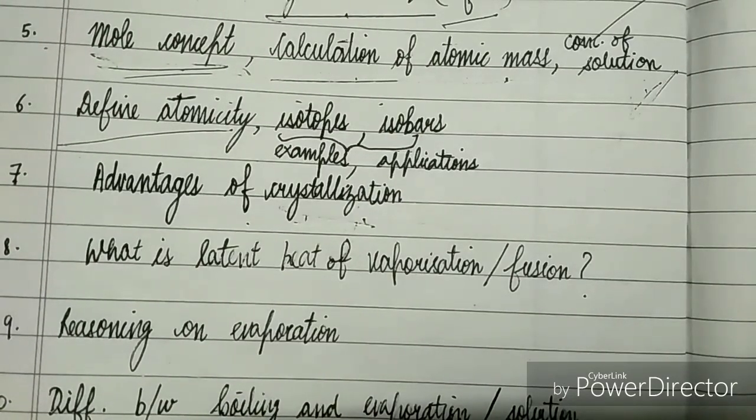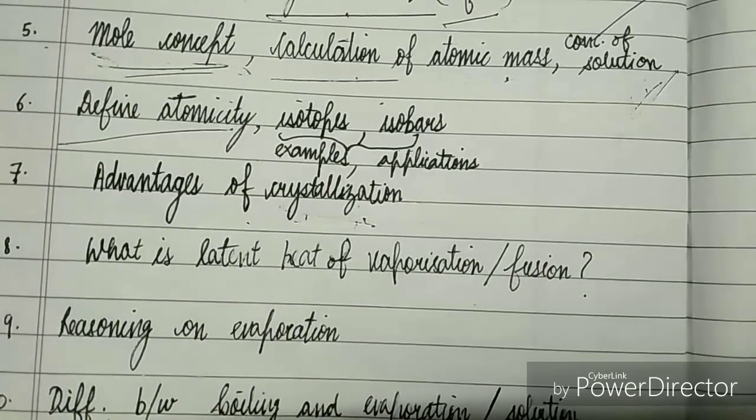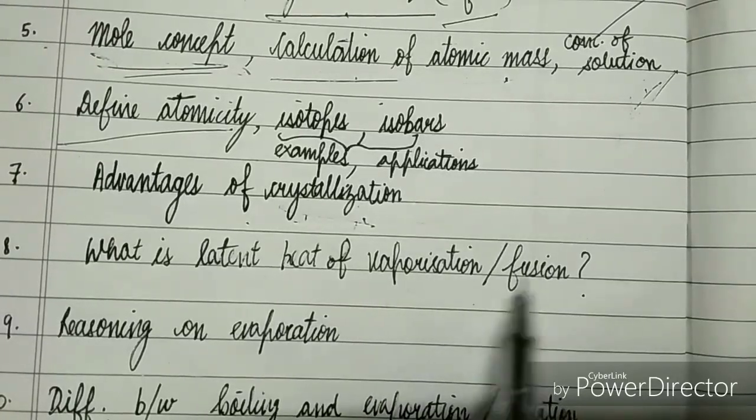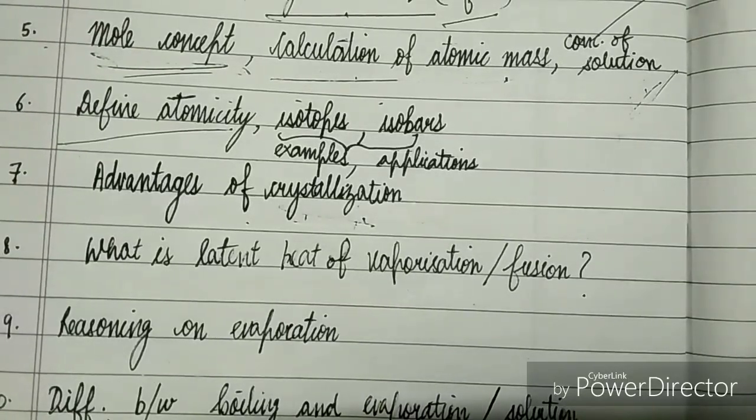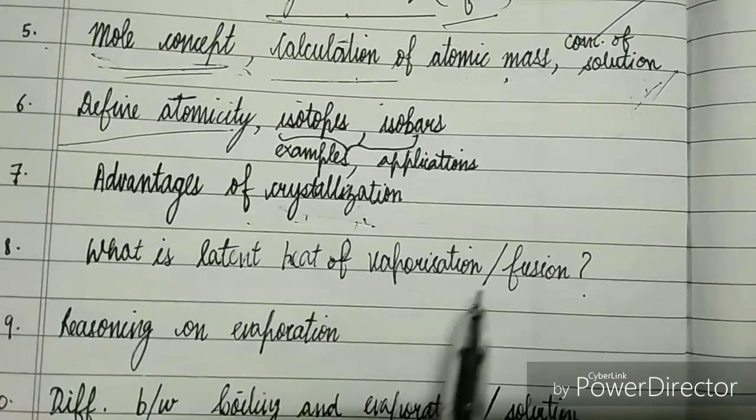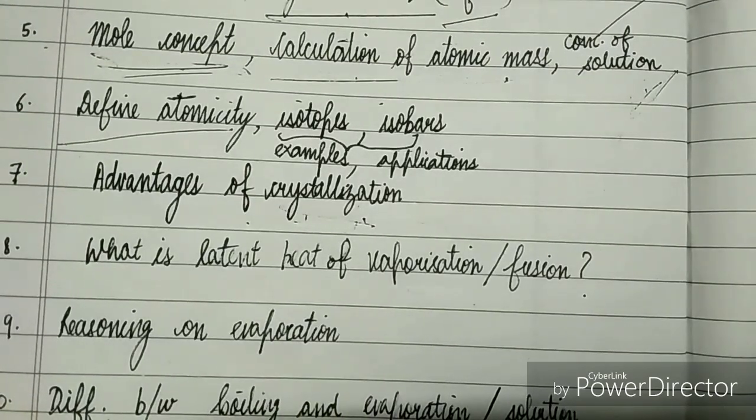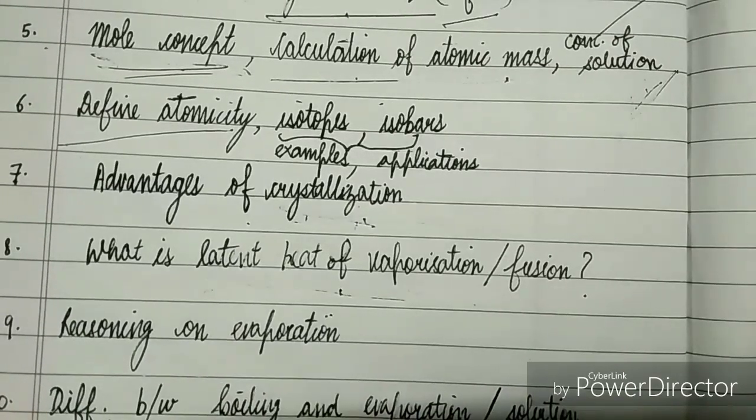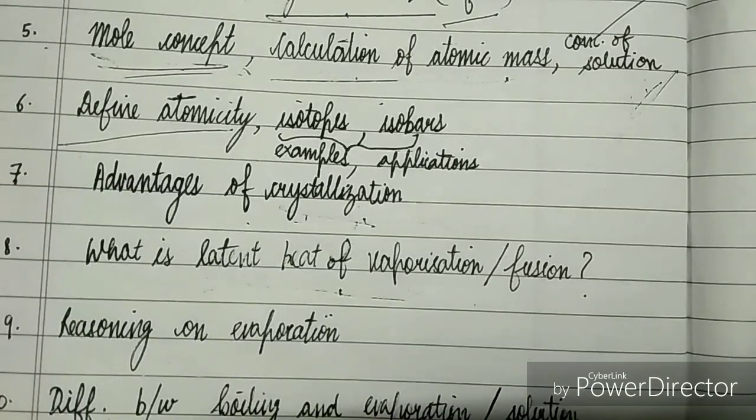On the eighth number, we have what is latent heat of vaporization or fusion. That's of course important for two marks. You should be clear, and also reasoning-based questions occur from this section, like why the temperature remains constant and such questions which are reasoning-based on latent heat. Be clear with the topic.